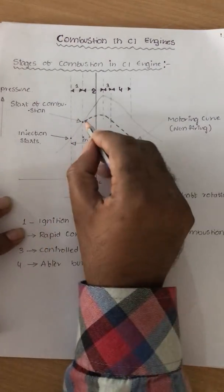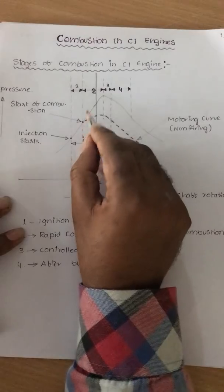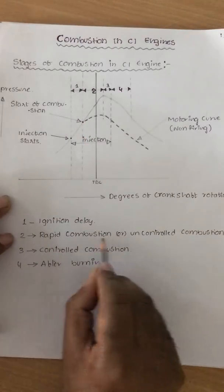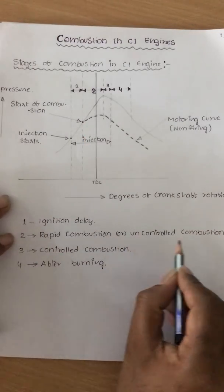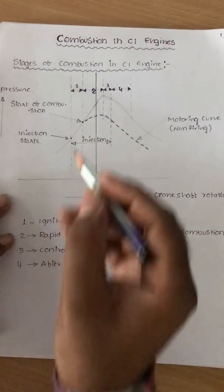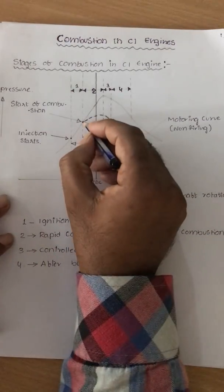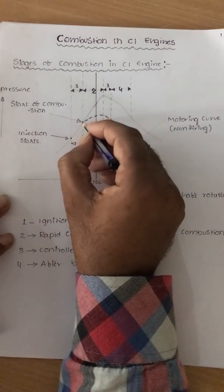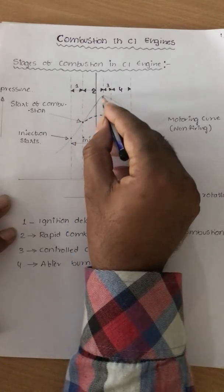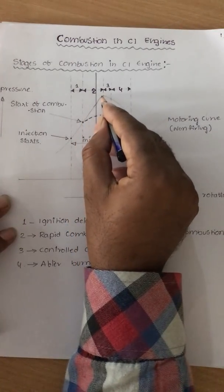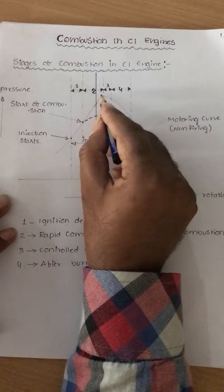The second stage, called rapid combustion or uncontrolled combustion, starts from the first rise of pressure to the point where the maximum pressure and temperature occur.